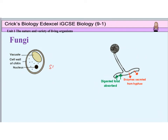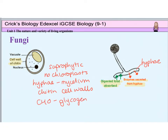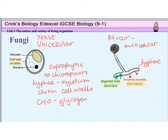Fungi are saprophytic, which means they feed by excreting digestive enzymes onto food and then absorbing the digestive products, normally through their thread-like hyphae. Their cells do not contain chloroplasts, so they are not able to carry out photosynthesis. Their cells are joined together to form threads called hyphae, which are a little bit like tiny roots. They contain many nuclei because they are made from many cells. The hyphae threads are organised into a tangled mycelium. Cell walls are made from chitin, which is a modified carbohydrate. They usually store their carbohydrates as glycogen, like animals. Examples include mucor, which are made up of hyphae and are the tiny black pin-head mould you often see on bread. And then there's yeast, which is a unicellular organism — single-celled — and we use this fungus widely in baking and making alcohol.